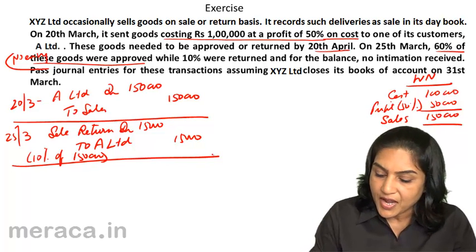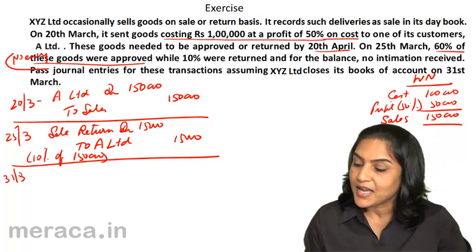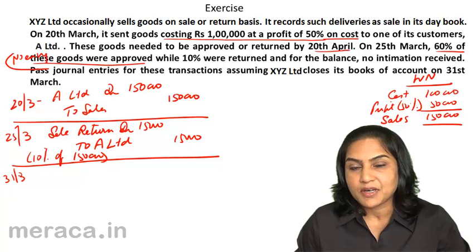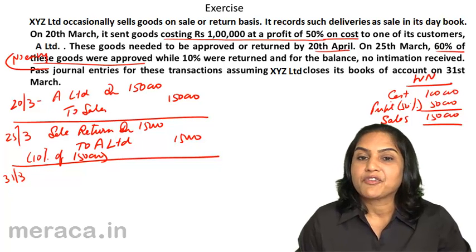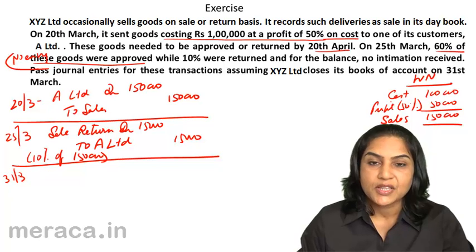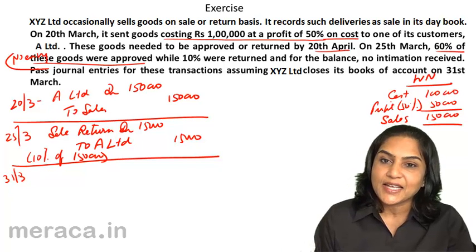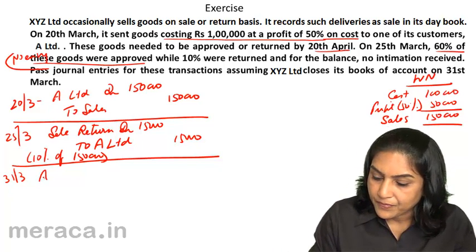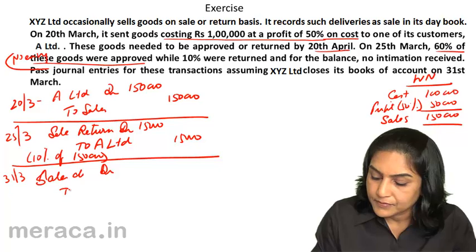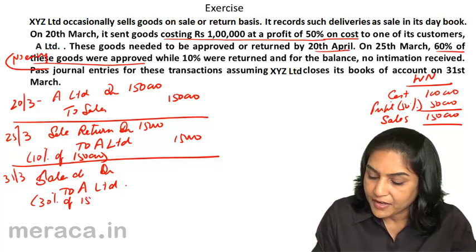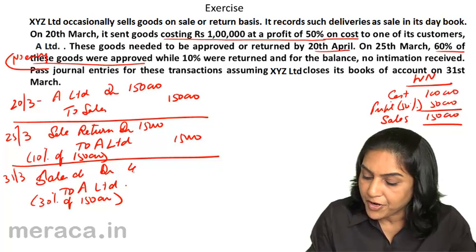As on the date of closing — 31st March — 30% of the goods are still lying with the customer, not returned and not approved. These goods belong to us and are not to be considered as a sale. So, we first cancel the sale transaction: Sales Account debit to A Limited, for 30% of ₹1,50,000, which is ₹45,000.